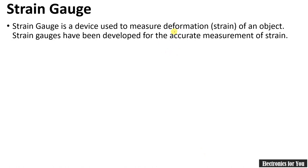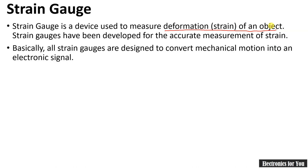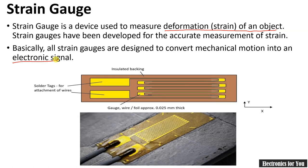Strain gauge is a device used to measure deformation, that is strain, of an object. It is a device which converts the deformation into an electrical signal, because this deformation causes a change in resistance which can be used for conversion into an electronic signal. This is the diagram for the strain gauge. Here we can see a wire wound in a zigzag pattern such that its length is increased. This is the gauge wire, which is approximately 0.025 mm thick, and these wires have two terminals which are soldered — solder tags for the attachment of wires.